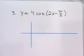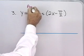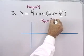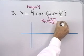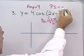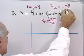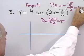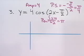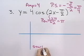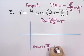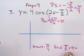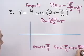y equals 4 cosine of 2x minus pi over 2. I have an amplitude of 4. I have a period of 2 pi divided by 2, which is pi. The phase shift is negative c over b, so negative of negative pi over 2, divided by 2, which comes out to positive pi over 4. My graph will start at pi over 4 and end pi units later at pi over 4 plus pi, which is 5 pi over 4.